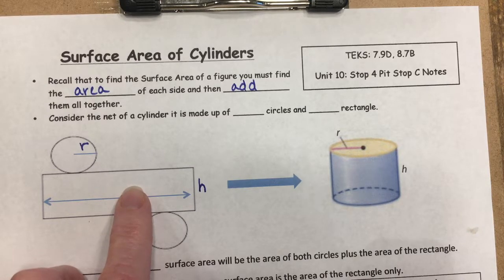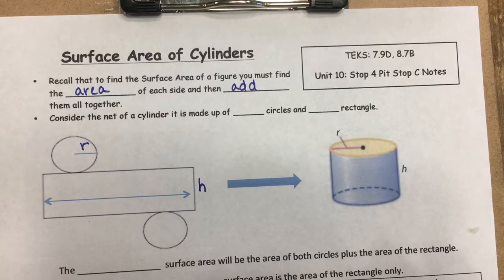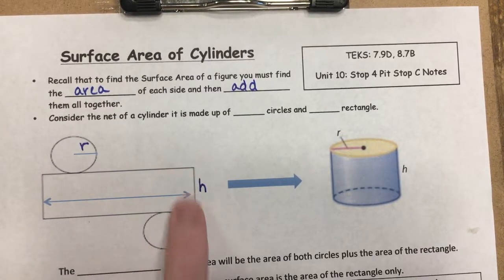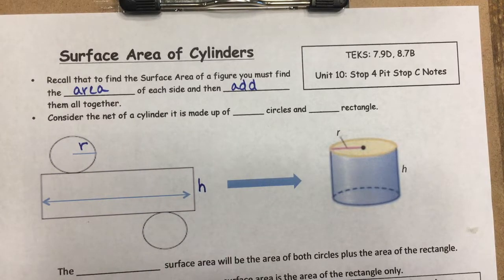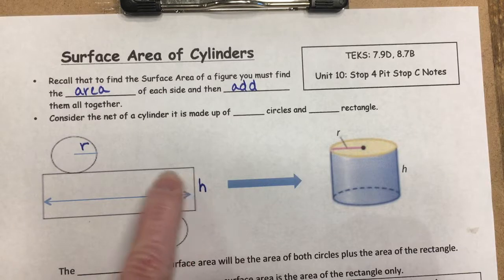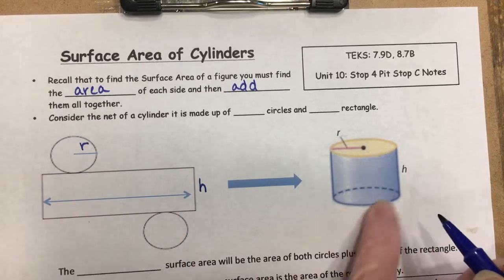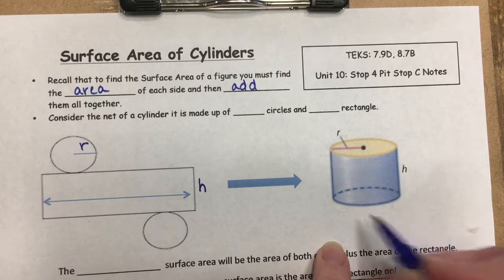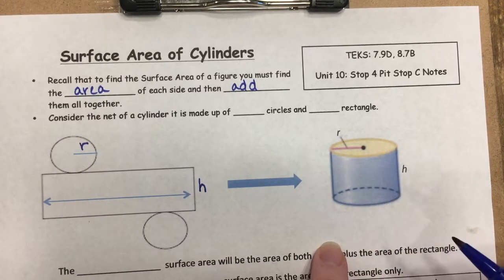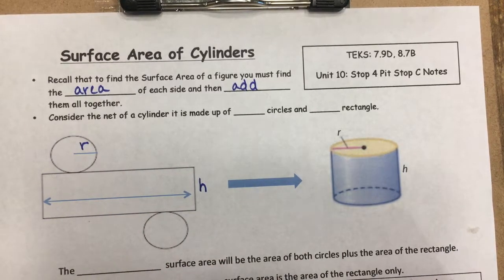Think about a can of soup — the label that goes around it unfolds into a rectangle. The height of that rectangle equals the height of the cylinder. The tricky part is knowing the length of the rectangle, because nothing is labeled directly telling us how far around the circle it goes.